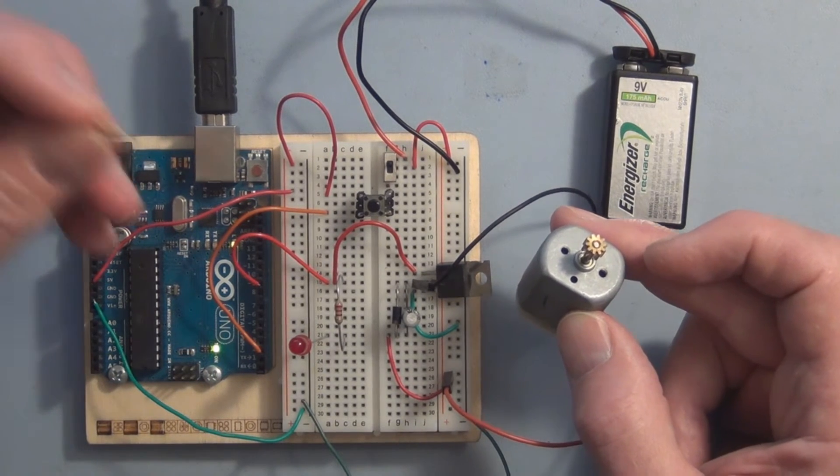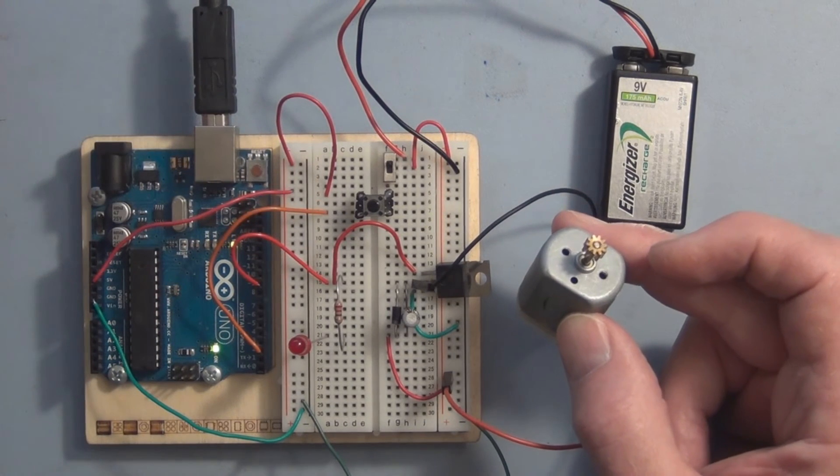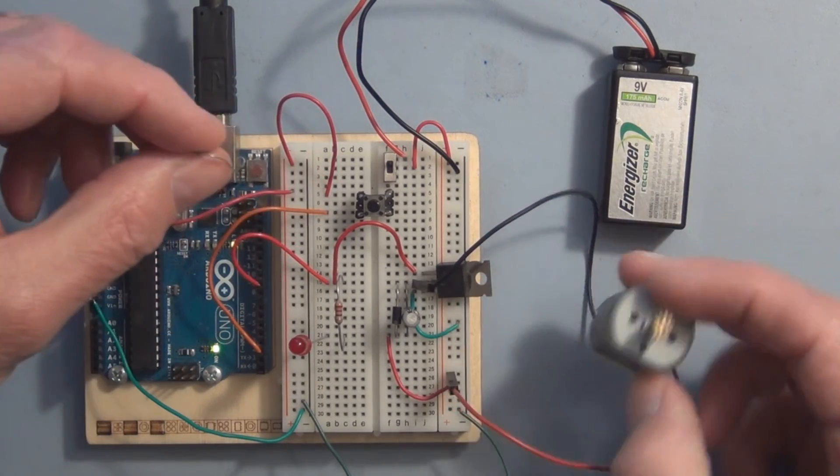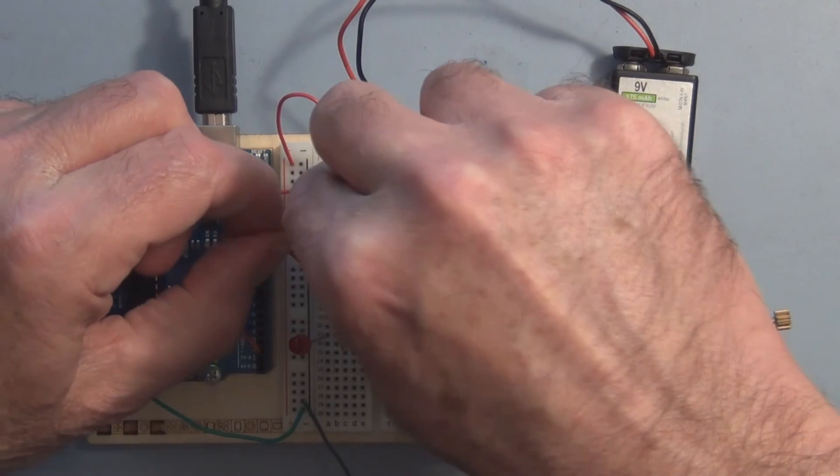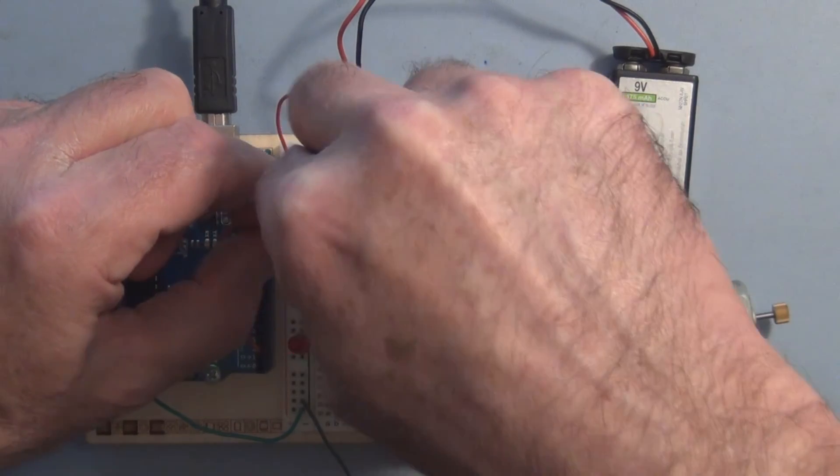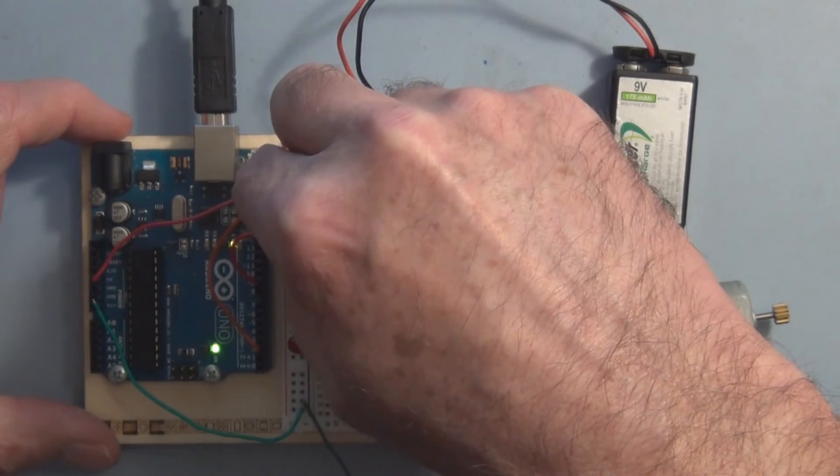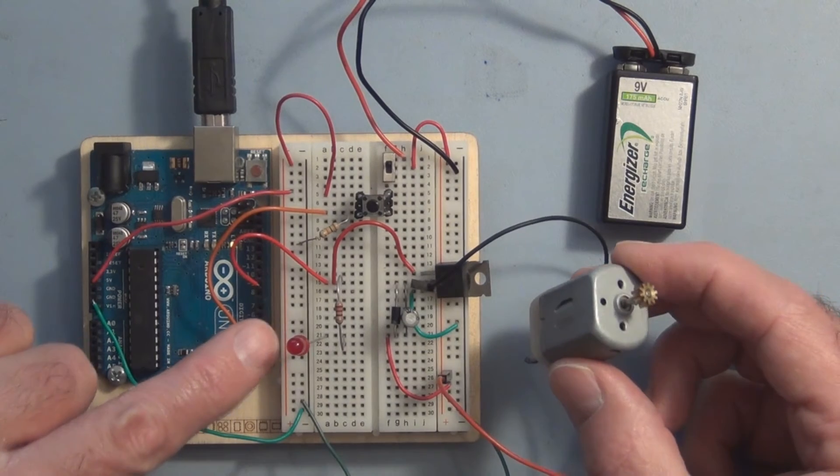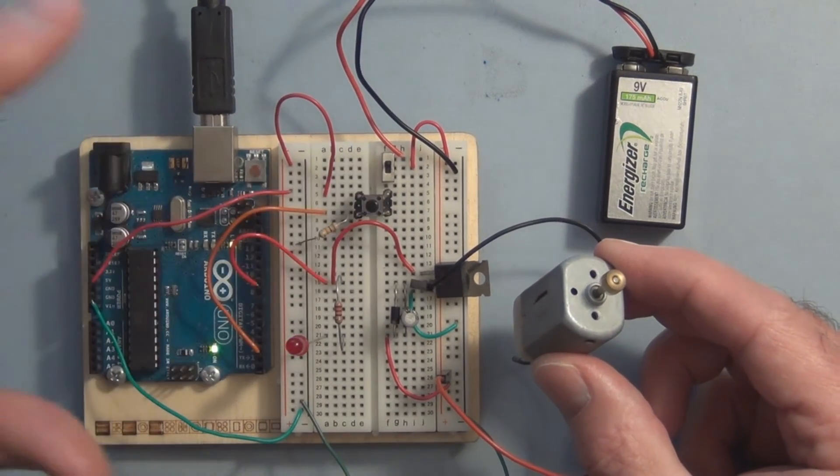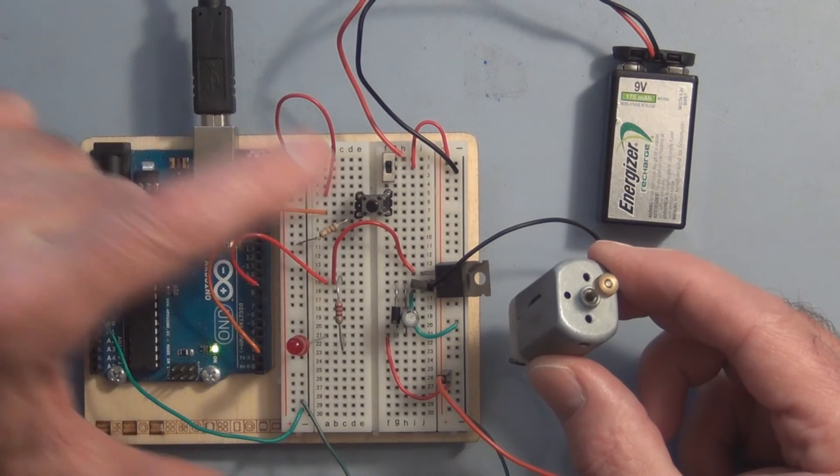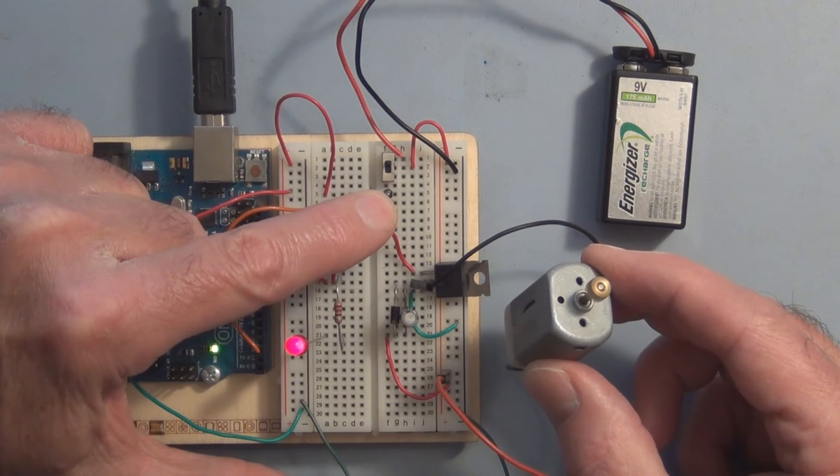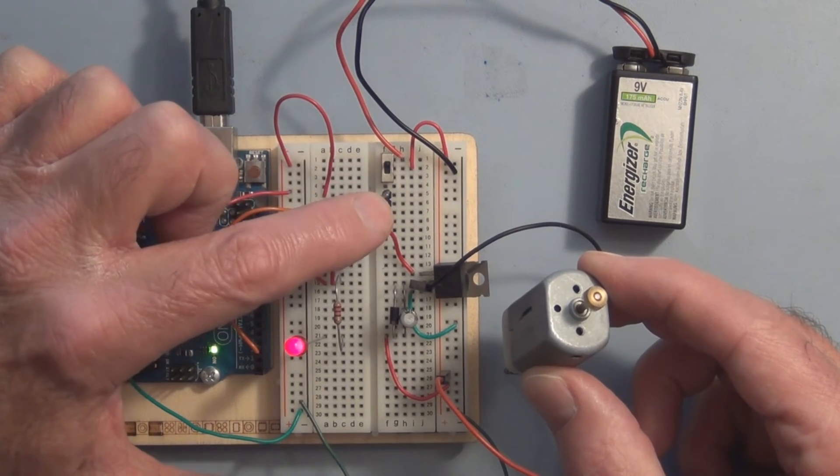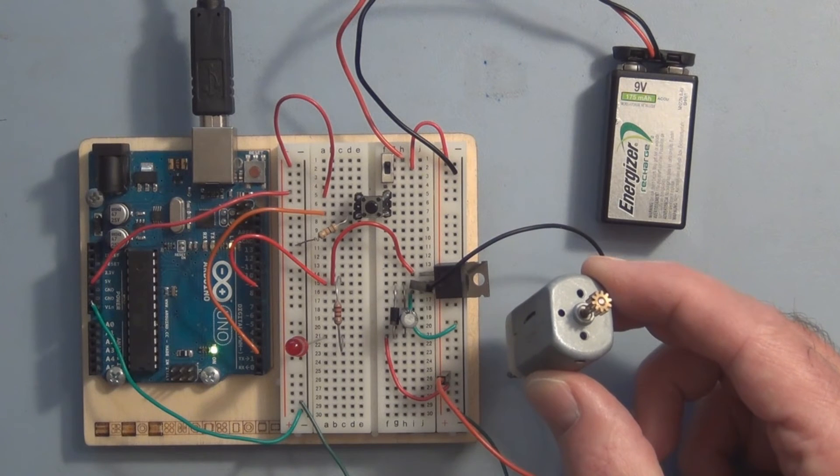So I didn't have this 10k resistor which you have on the other side of the switch here to ground. Just put that right there and now I no longer have that issue. When I press the button it turns on and when I release it it immediately turns off. So now it's working correctly.